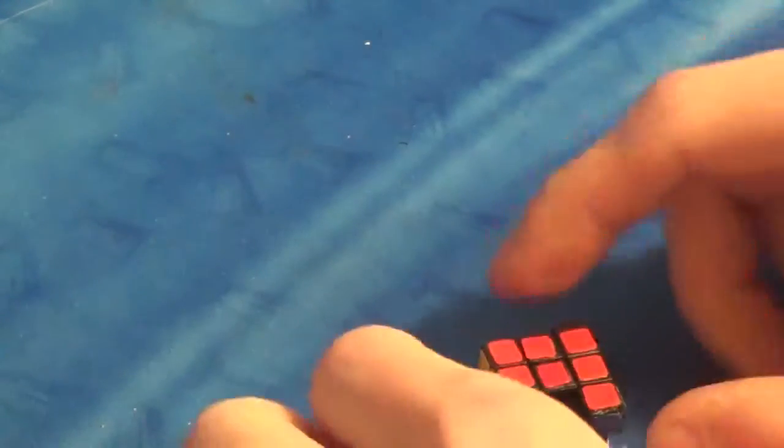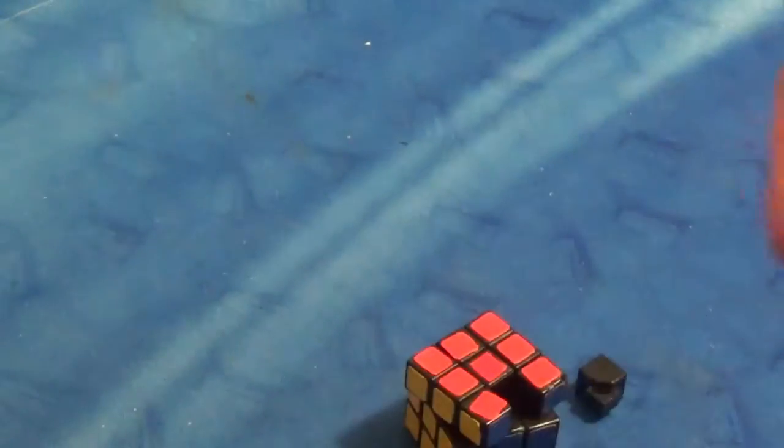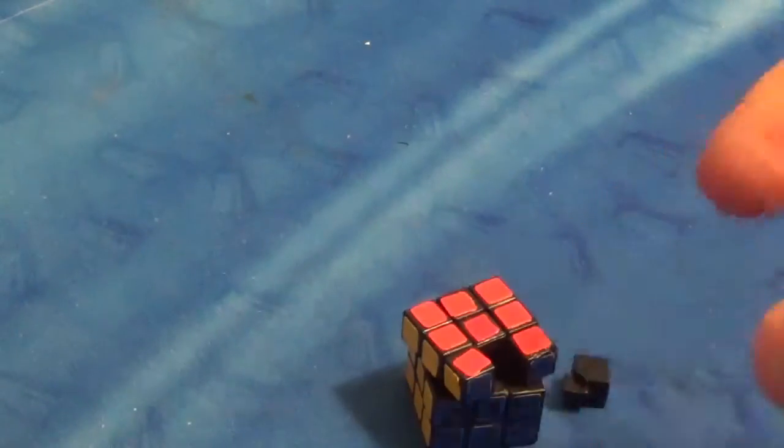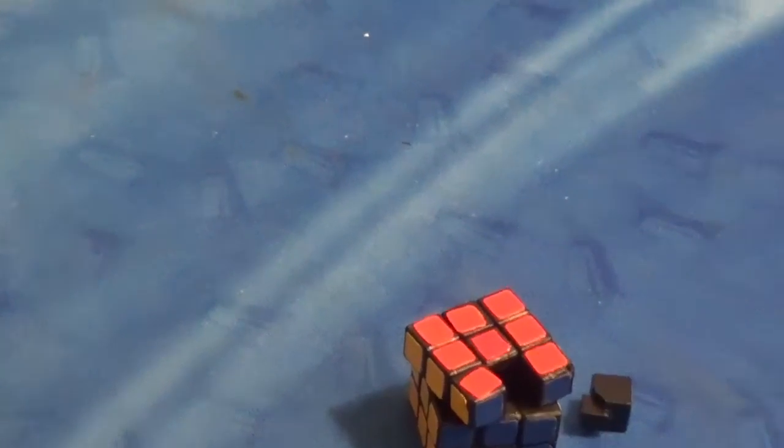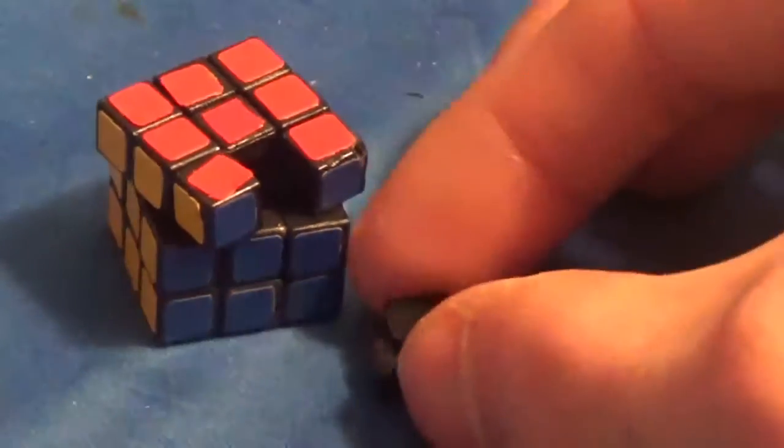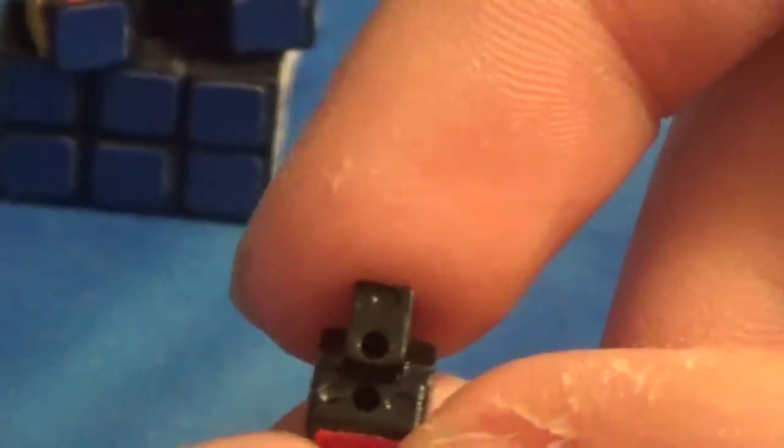So now that I took apart the mechanism, I mean took apart an edge, I'll show you how it looks like, what pieces look like. So here's what an edge looks like. Looks like a standard edge and it's a bit hollow on the inside.